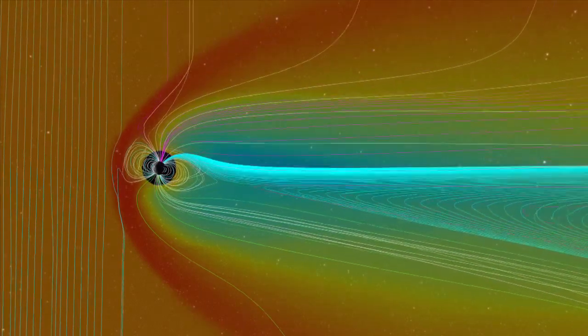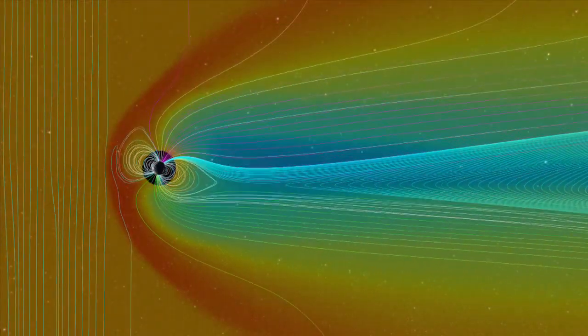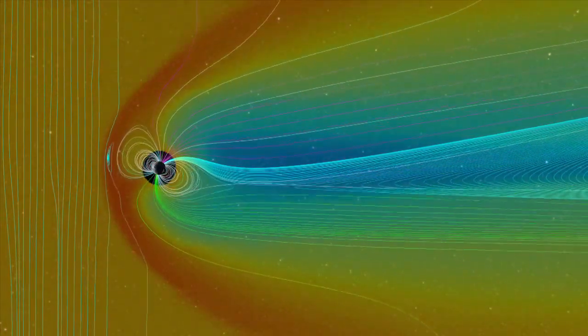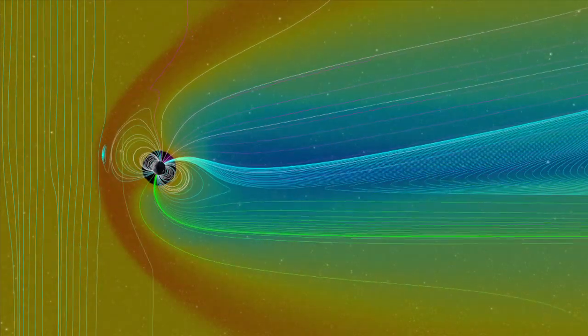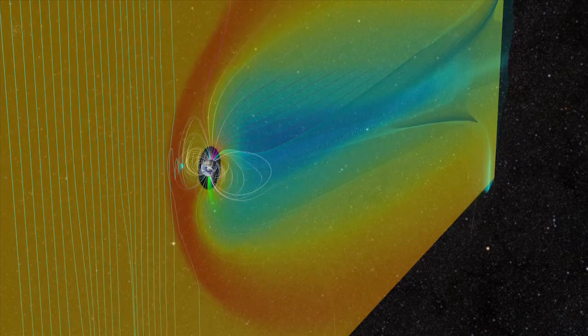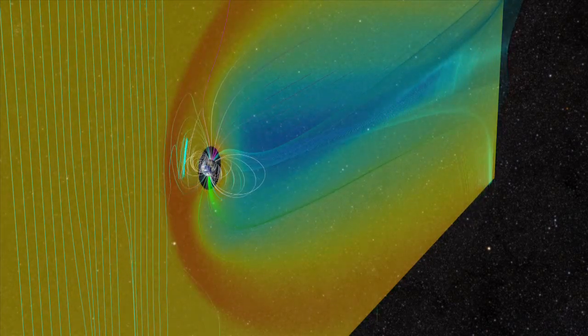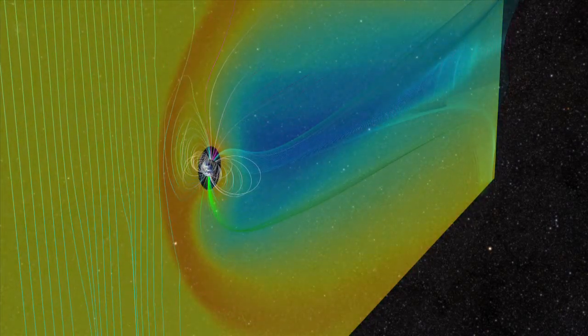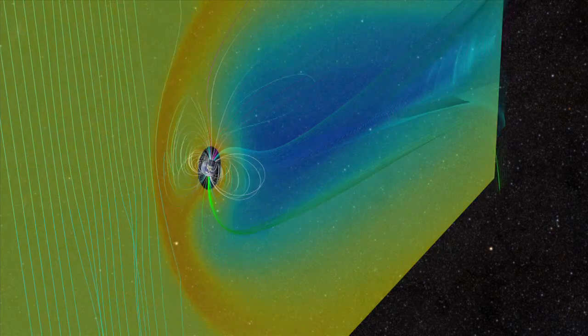The Sun's magnetic field, carried in the plasma of the solar wind, flows continuously by the Earth, distorting the planet's field and pulling it back into a windsock-type structure. The red illustrates the higher-density plasma which forms the magnetopause, the boundary between the magnetic influence of the Sun and the Earth.